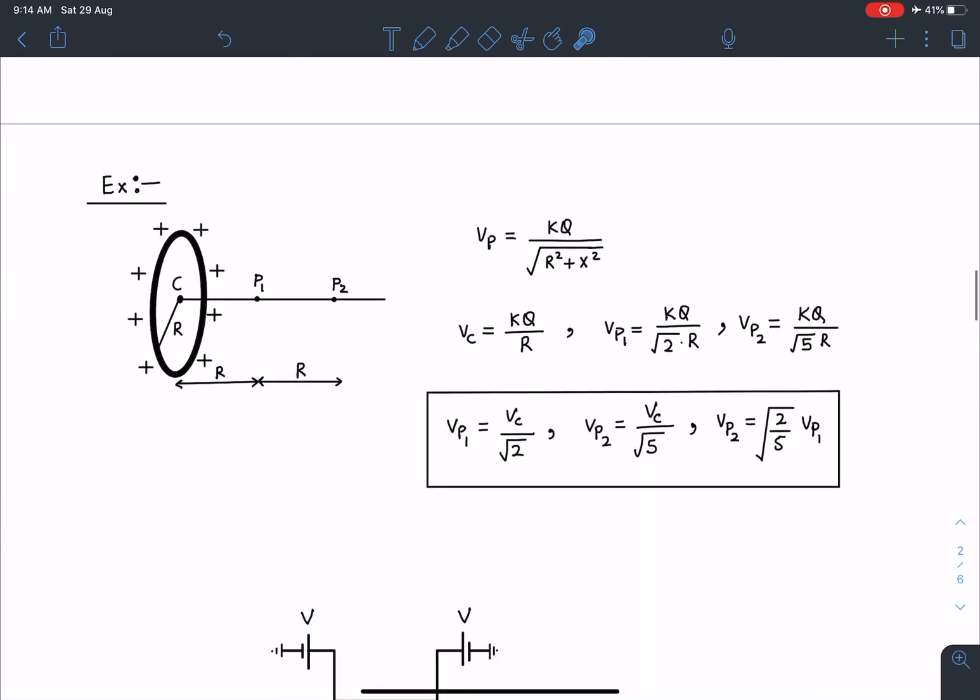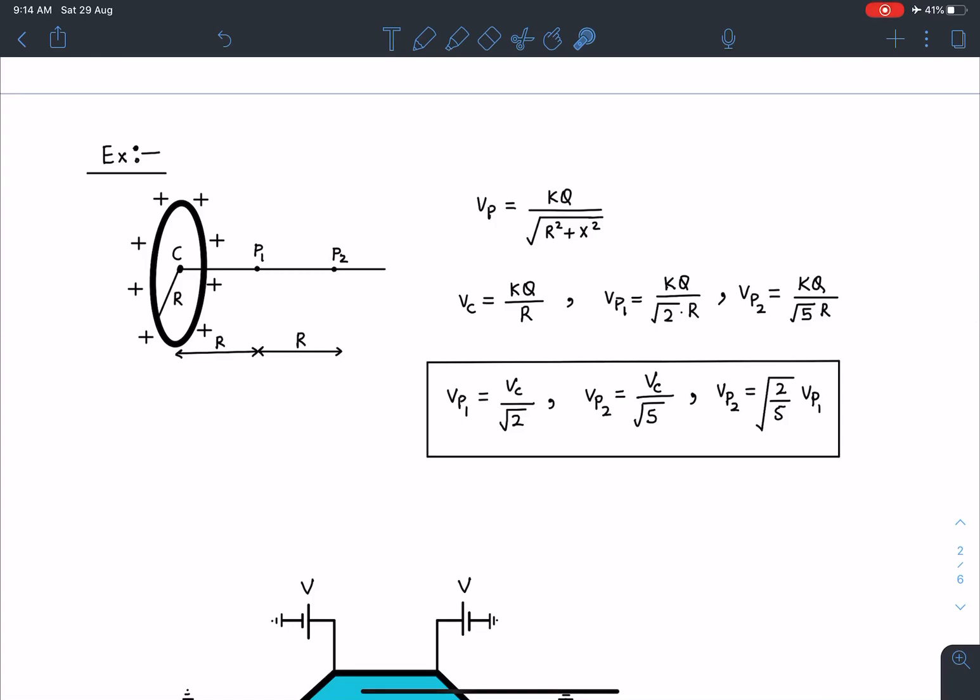Similarly we can take another example. For a uniform charged ring there are three points C, P1 and P2. Potential formula on the axis of the ring is KQ by root of R square plus X square. So potential at the center is KQ by R, and P1 which is at a distance of R is KQ by root 2R. Similarly I can write for P2 at a distance of 2R, VP2 is KQ by root 5 times R.